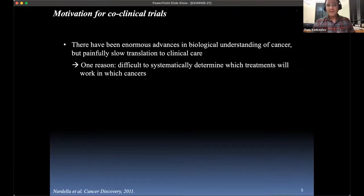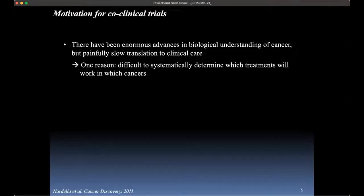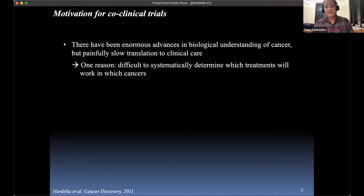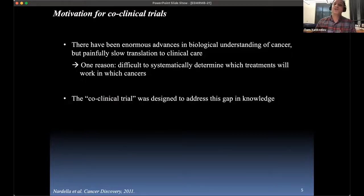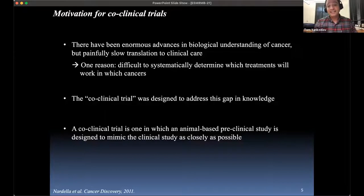There have been enormous advances in our biological understanding of cancer, but it's been painfully slow translating it into clinical care. One reason is that it's really difficult to systematically determine which treatments will work in which cancers. Experiments you can't do in a person you can potentially do in animals. The notion of a co-clinical trial was designed to accelerate the gap between what's going on in the lab and what's going on in the clinic.